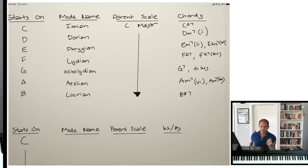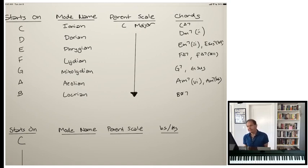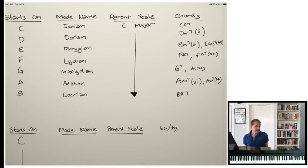So let's dive in. Most of you probably understand that the modes are these seven-note scales that have different intervallic patterns than the major scale. We call them modes because we're starting a major scale on a different note — so it's a mode of a major scale. People often get confused with terminology. On the left-hand side of this list, I put what note the mode starts and ends on.